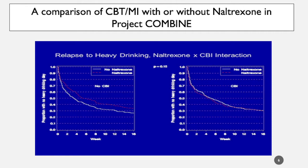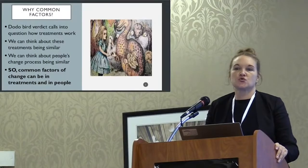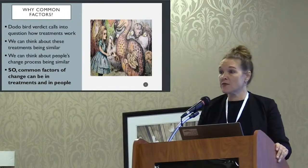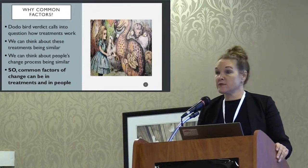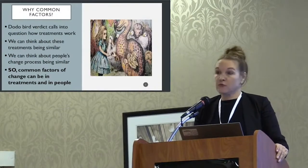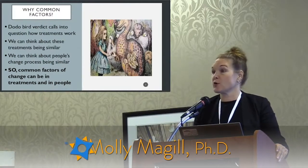If you look at the no-CBI arm — a direct contrast of naltrexone and placebo — you can see that the placebo group does do a bit worse, but not that much worse. This has been referred to as the Dodo bird verdict. It's not unique to addictions; it's true in psychotherapy and mental health broadly. I'm not saying all treatments are absolutely equal, but on average, when you compare two evidence-based treatments, they perform similarly well.